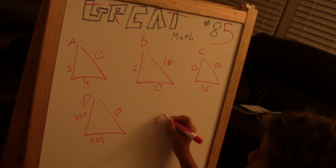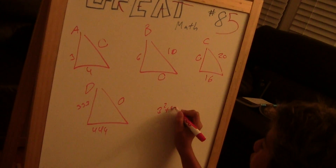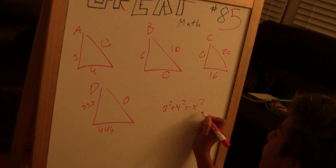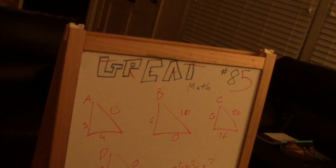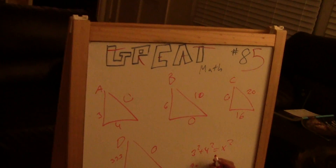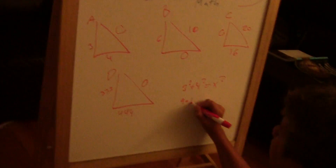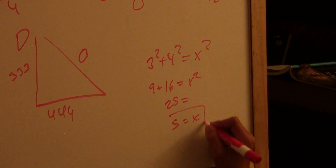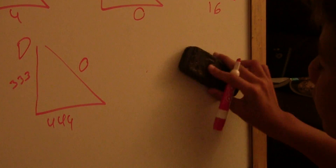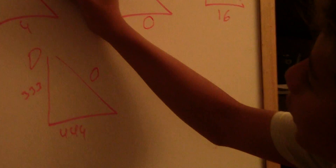This one: 3 squared plus 4 squared is equal to something squared. That's 9 plus 16 equals x squared. I've seen this before — this is 25, therefore x equals 5. That was an easy one.